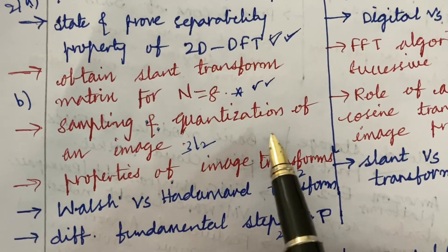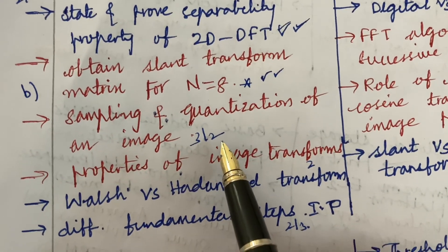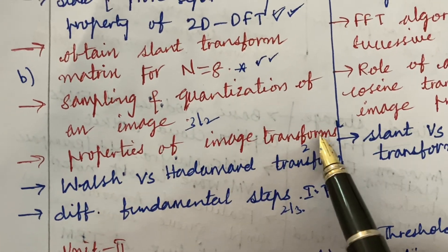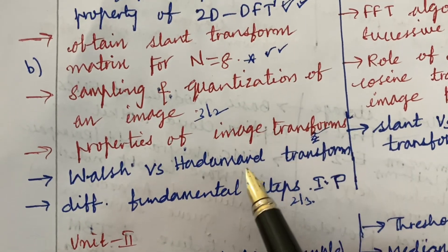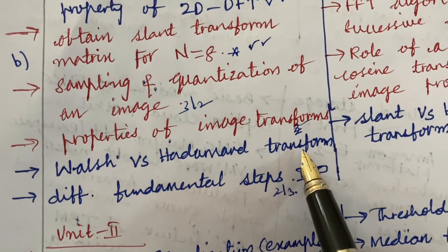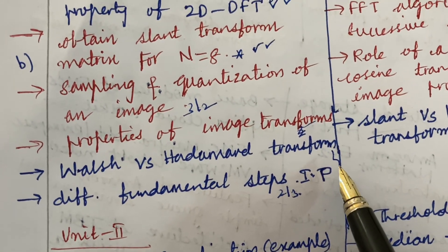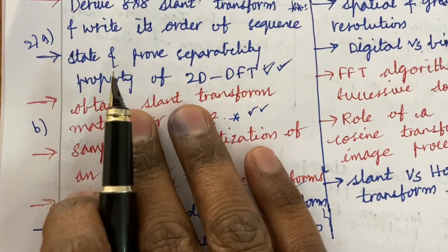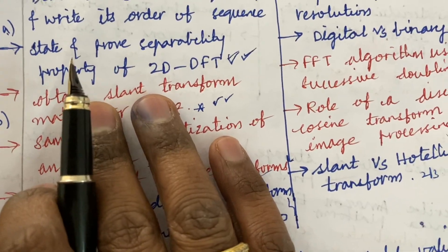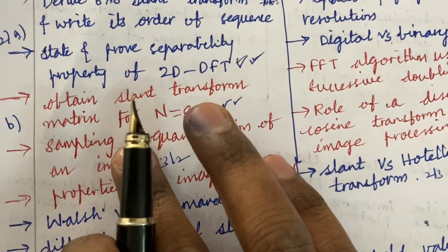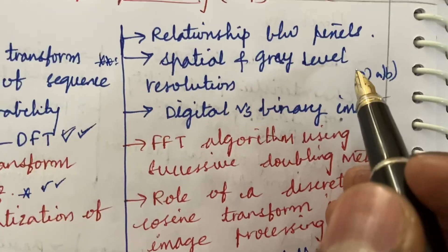Dear students, sampling and quantization of an image is a 3 or 2 mark question and the properties of image transform is also said to be a 2 mark question. Slant versus Hadamard transform and the different fundamental steps of image processing is also said to be 2 and 3 mark questions. This is all about 2AB and 1AB which I have covered here.